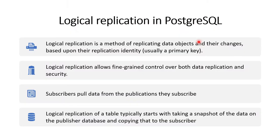So what is logical replication in PostgreSQL? Logical replication is one of the ways of replicating the data and its associated changes from one database to another database — the databases may be on the same host or different hosts. We are talking about tables where individual rows are identified using the primary key, so any changes happening on the table will be replicated from one database to another.